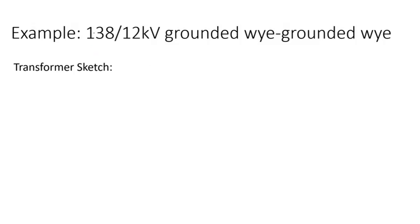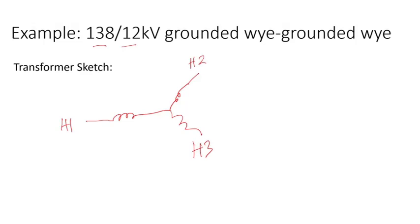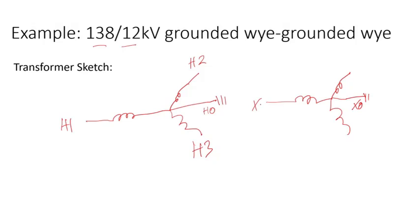Let's assume we have a 138 kV to 12 kV grounded-Y grounded-Y transformer. This winding has terminals H1, H2, H3 and here is the neutral — we can call it the H0 bushing, which is grounded. The same applies to the low voltage side, with terminal X0 assumed solidly grounded since I'm not putting anything in the neutral.